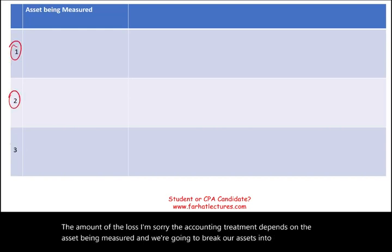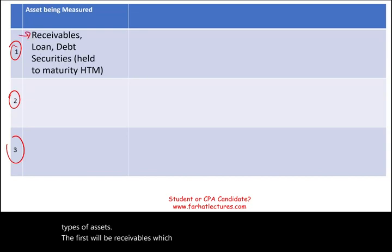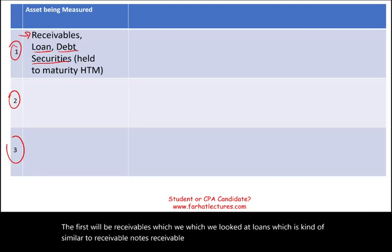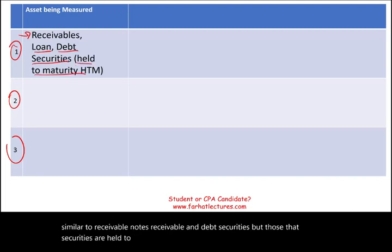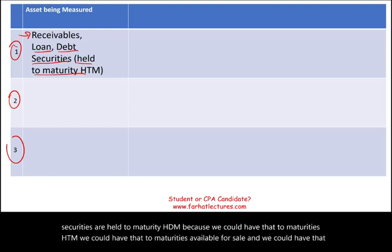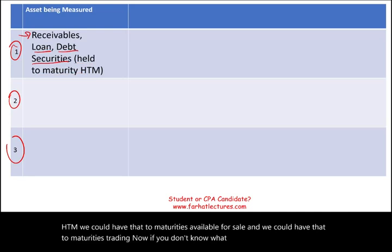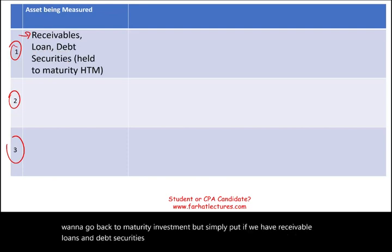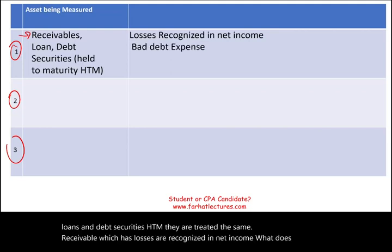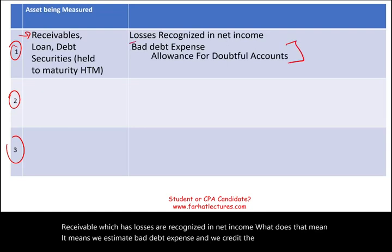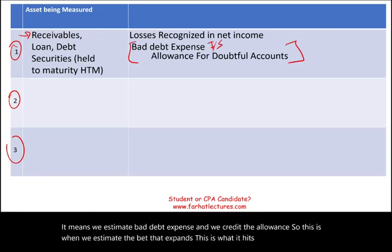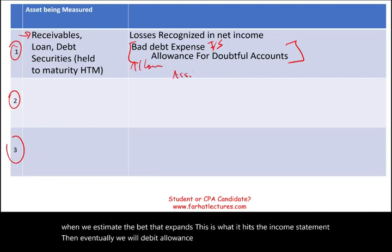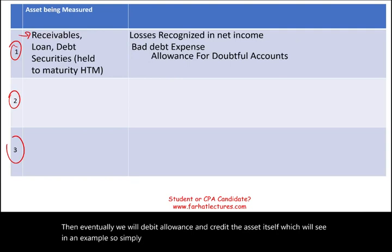The accounting treatment depends on the asset being measured. We break assets into three types: receivables, loans such as notes receivable, and debt securities held to maturity (HTM). If we have receivables, loans, and HTM debt securities, they are all treated the same as receivables — losses are recognized in income. We estimate bad debt expense and credit the allowance, which hits the income statement. Eventually we debit the allowance and credit the asset itself. For held-to-maturity: debit bad debt expense, credit allowance.